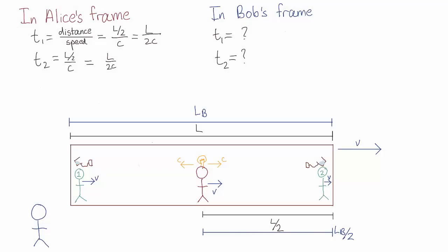So in Bob's reference frame, Alice is moving forwards at speed v when she emits those photons.